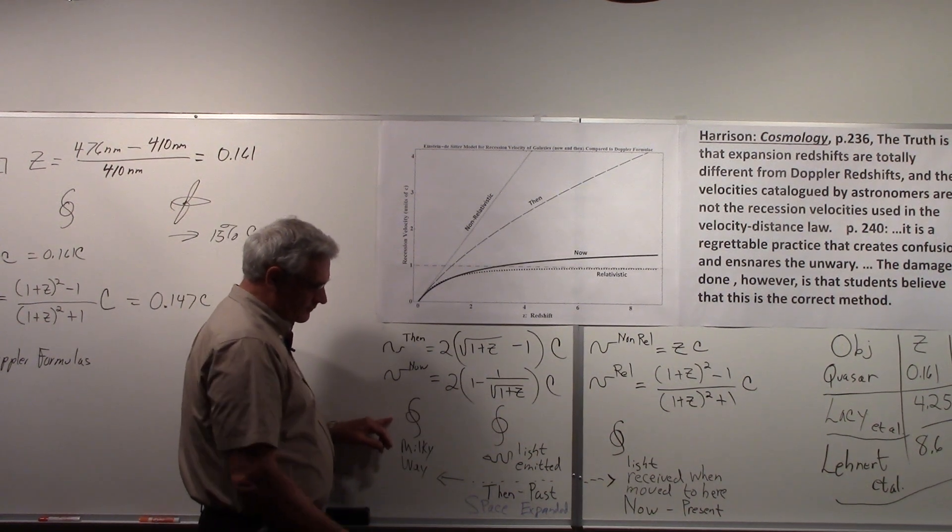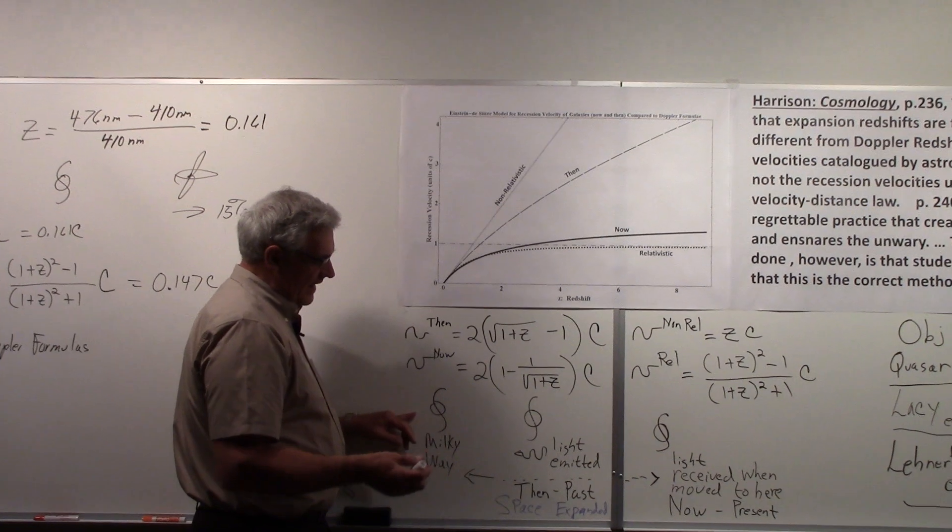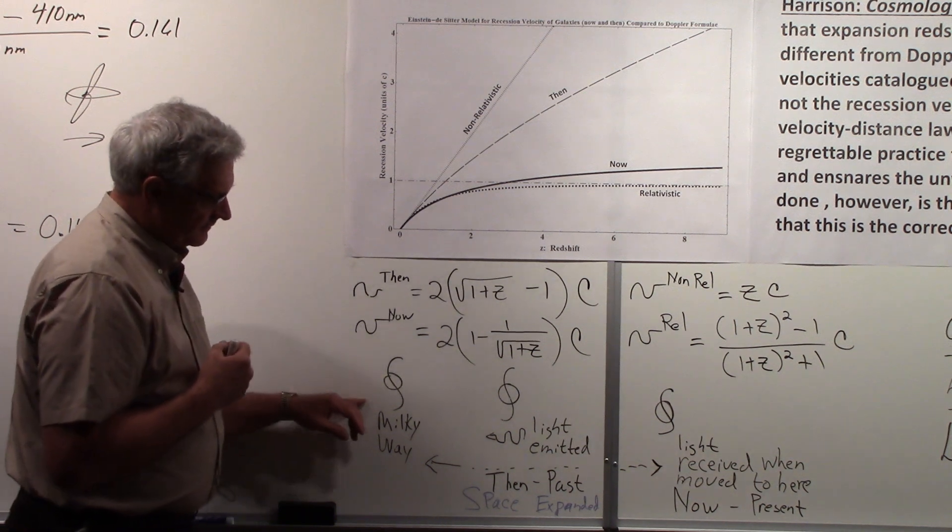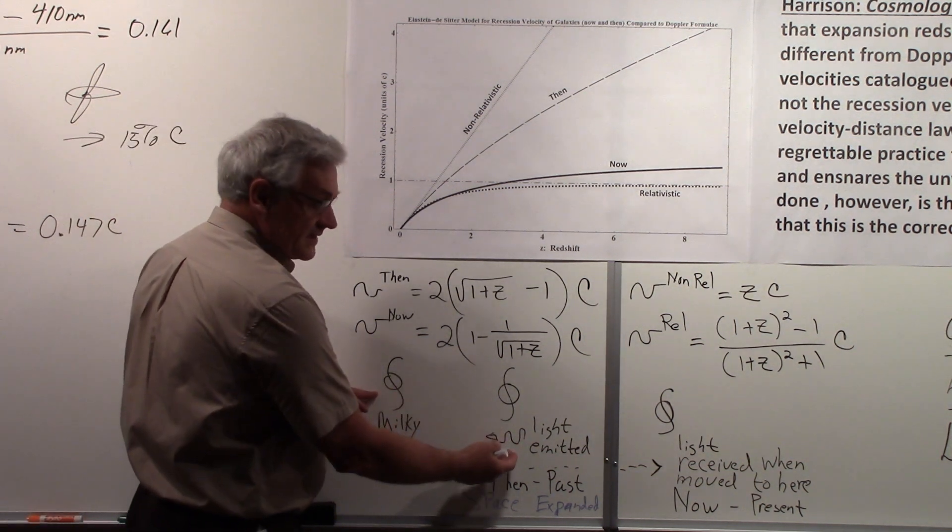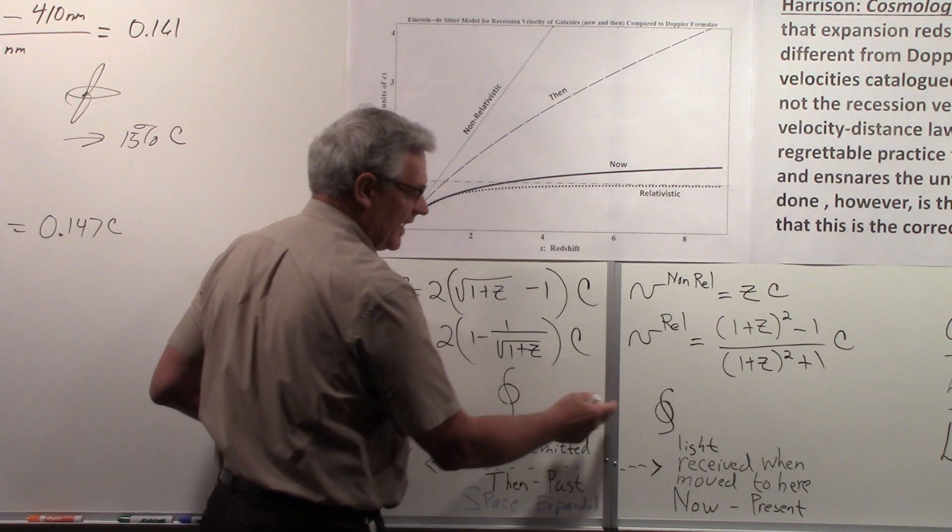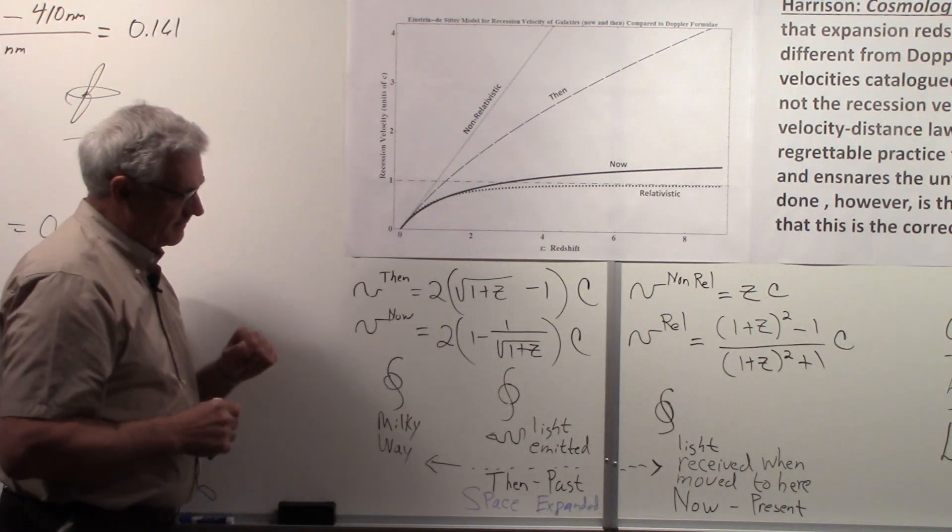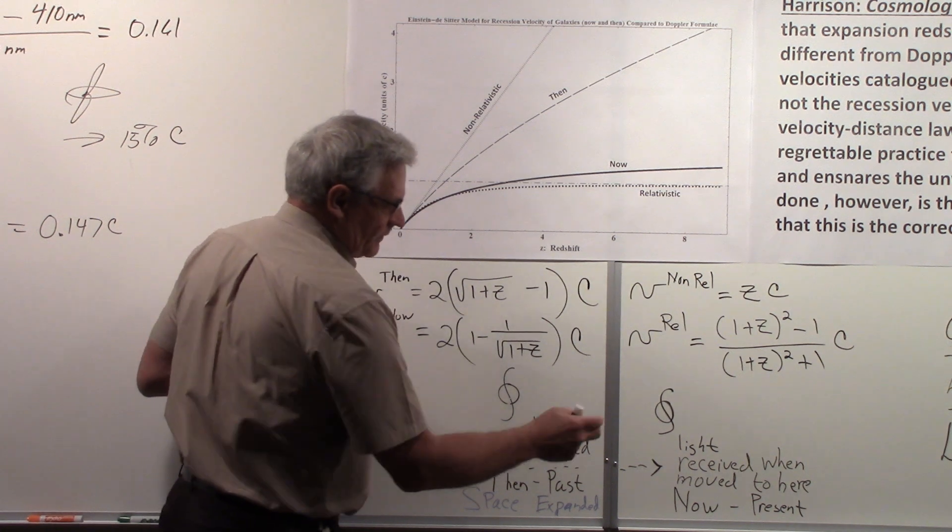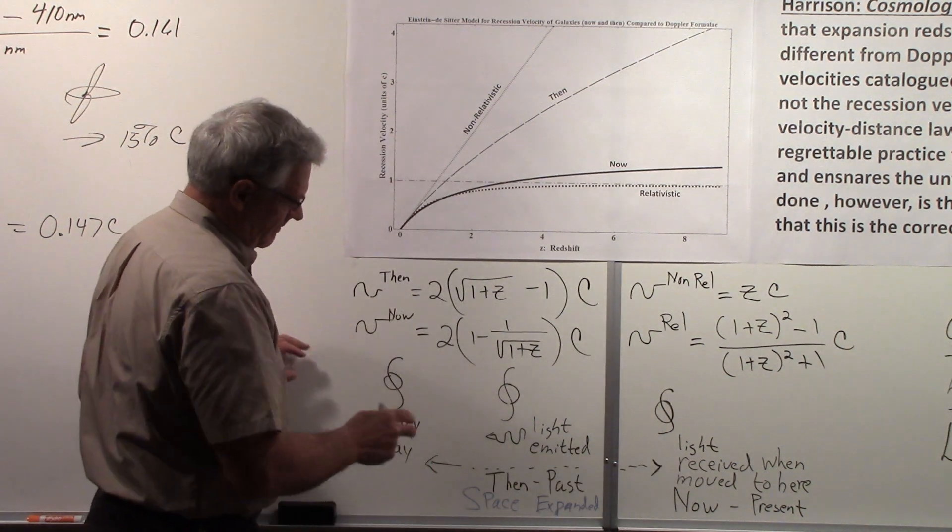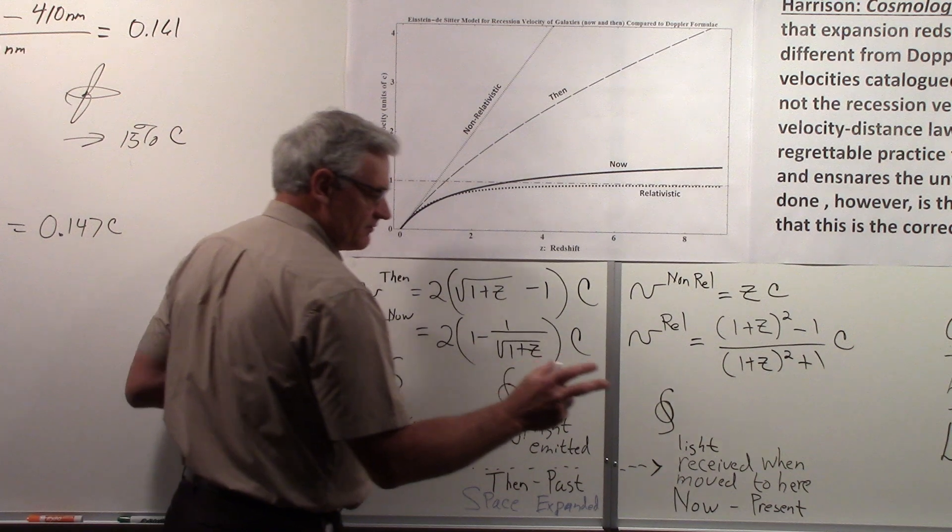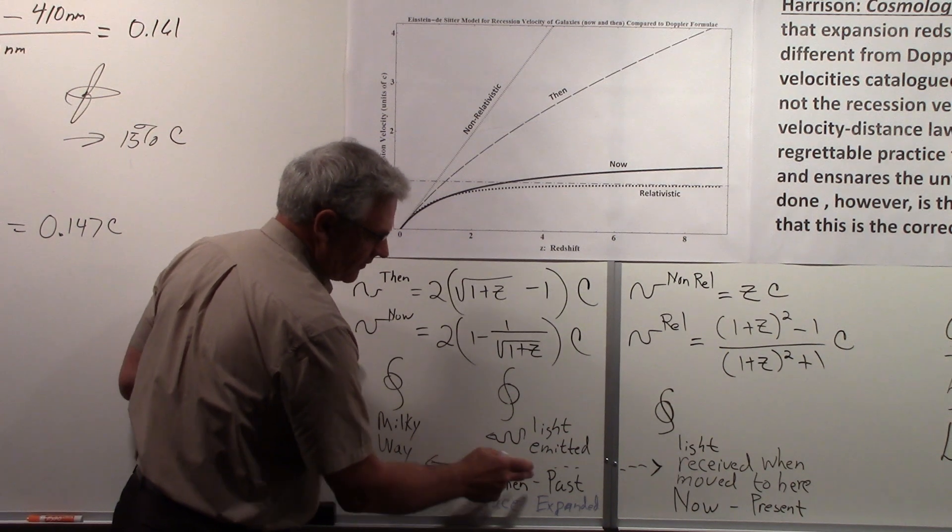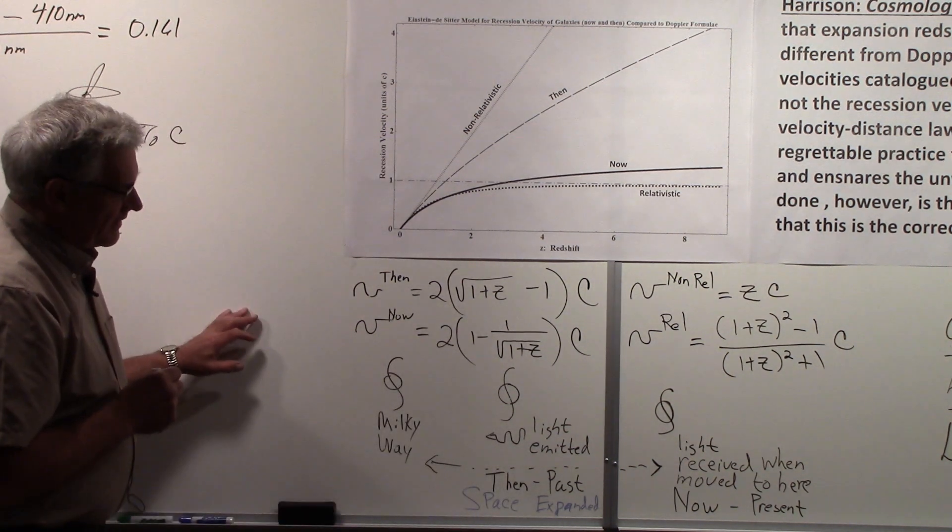Here we are in the Milky Way again. Here's the object, let's say galaxy, that we're looking at, and it emits some light that we're going to see. By the time this light reaches our galaxy, this galaxy, the one we're interested in looking at, has moved further away because space is expanding. So when the galaxy is here, let's say that is when the light is received back here at the Milky Way. So this represents the 'now' or the present position, and this represents the 'then' or past, when the galaxy emitted its light.